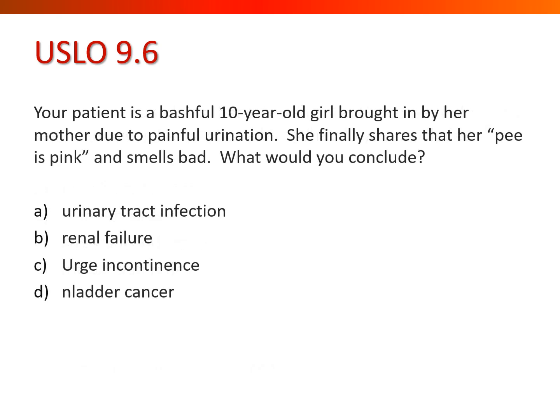Your patient is a bashful 10-year-old girl brought in by her mother due to painful urination. She shares that her urine is pink and smells bad. Pink or amber-colored urine indicates blood in the urine, and the smell indicates other things in there. Painful urination is also pathognomonic for urinary tract infection — so you'd conclude she has a UTI.